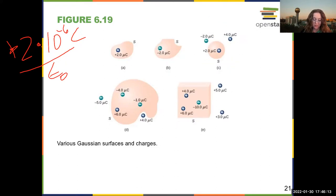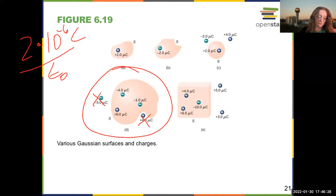The next one, this guy, these charges don't matter, they are not enclosed in the surface. So our total charge is 6 minus 4 minus 1 equals 1 microcoulombs. So our total flux is 1 microcoulombs divided by epsilon naught.